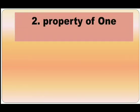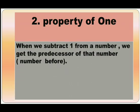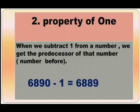Second, property of 1. When we subtract 1 from a number, we get the predecessor of that number — the number before. Here, when 1 is subtracted from the number 6890, we get the number 6889, which is the predecessor of the number 6890. It means whenever 1 is subtracted from any number, we always get the predecessor of that number.